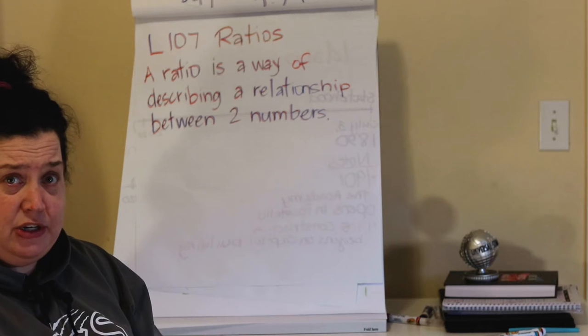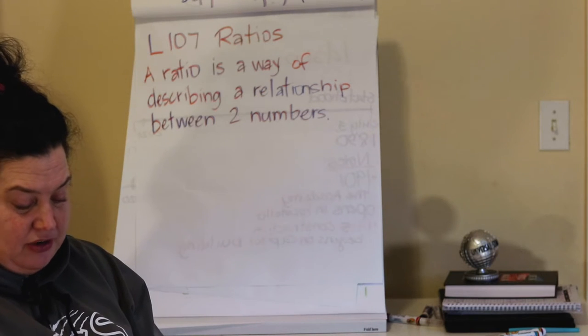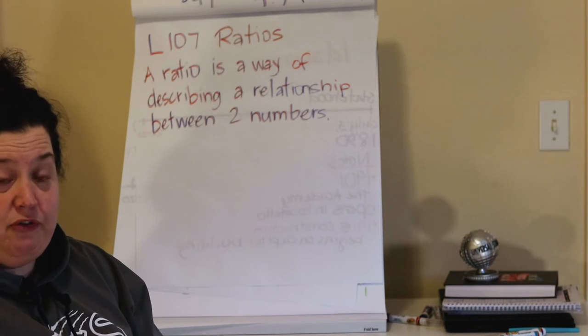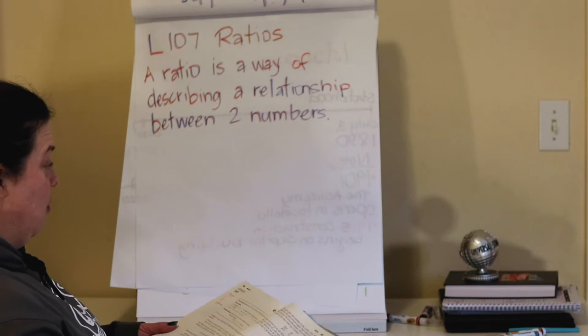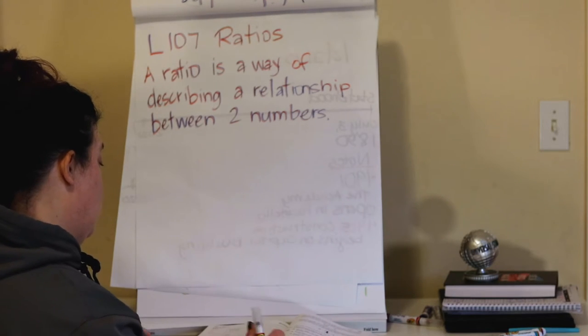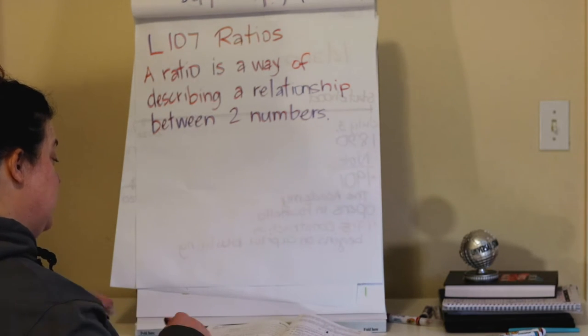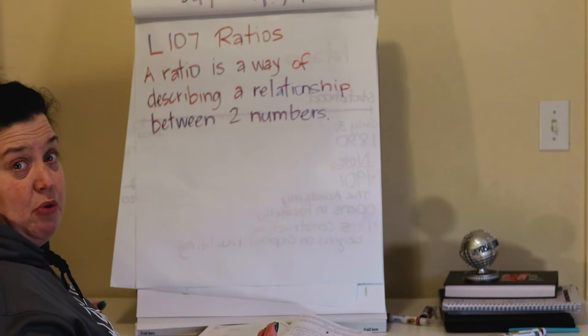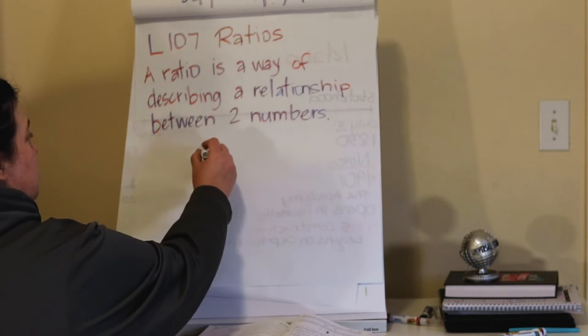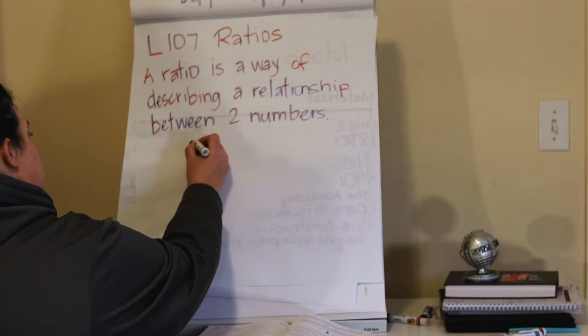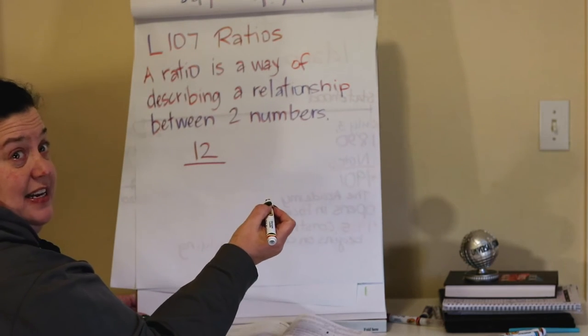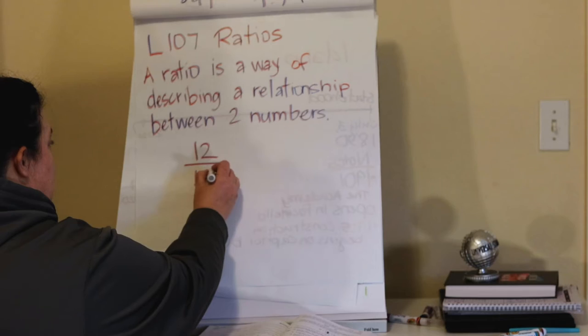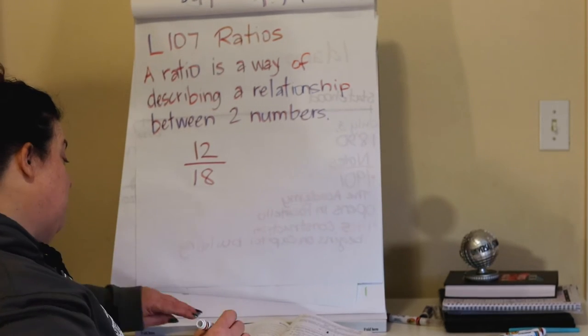We often write ratios as fractions. We write the terms of the ratio in order from top to bottom. So when they said in our story 12 boys to 18 girls, the 12 boys was spoken first. So we would put 12 on top and then the girls with 18 was next. We put that down below in the denominator.